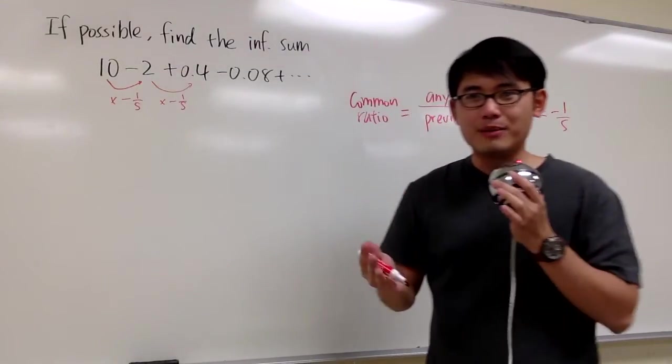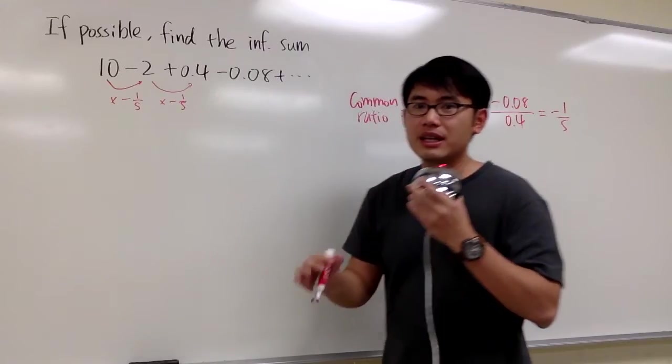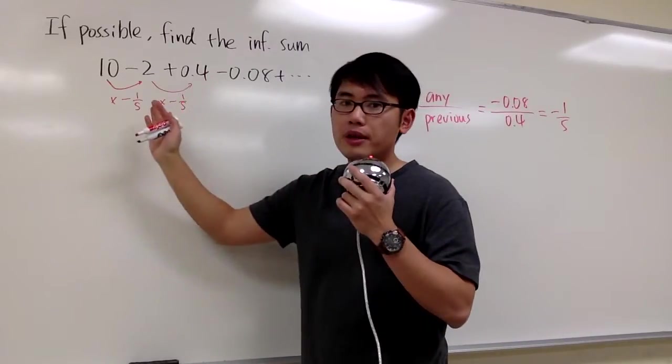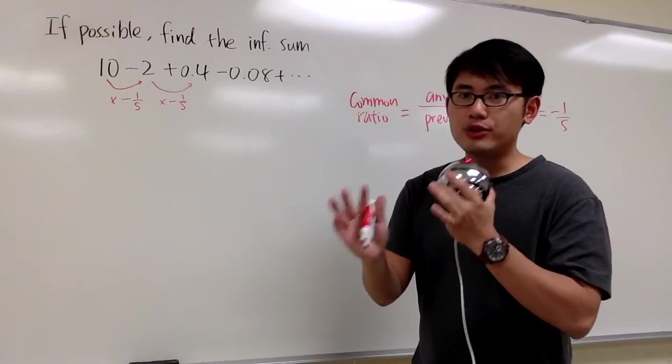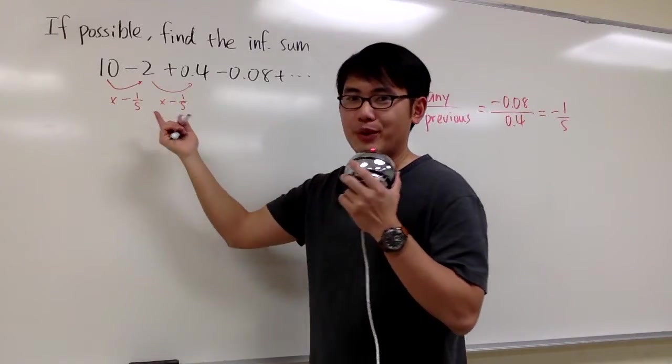So that's how you find the common ratio. Pick a number and divide it by its previous, and you should do it with two pairs at least so that you can see that the common ratios are the same. The common ratio here is negative 1 fifth.